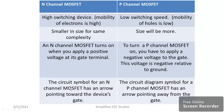The circuit symbol for n-channel MOSFET has an arrow pointing towards the gate. For p-channel MOSFET, the circuit symbol has an arrow pointing away from the gate. You can identify p-channel and n-channel MOSFETs by looking at their symbols — one arrow is towards, the other is away.